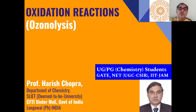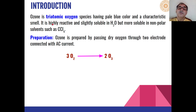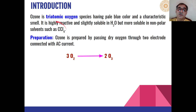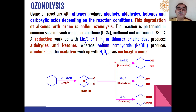Continuing with our lecture series on oxidation reactions, in this lecture we will discuss the details of ozonolysis. Ozonolysis is achieved using ozone as the oxidant for different types of organic reactions. Ozone is a triatomic oxygen which possesses a pale blue color and has a characteristic smell. It is highly reactive and slightly soluble in water but soluble in most non-polar organic solvents like carbon tetrachloride. Ozone can be prepared from oxygen through two electrode connection with AC current, which converts oxygen into ozone.